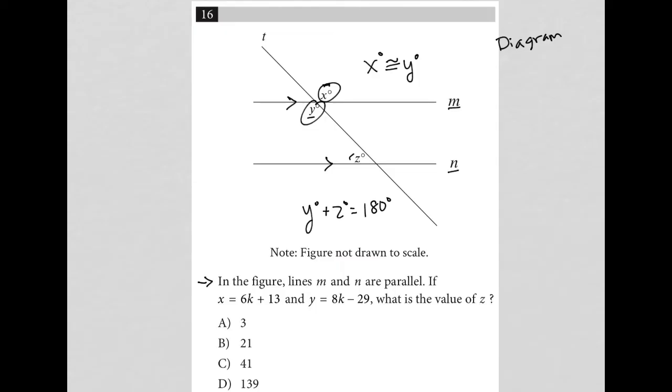Because I know that x equals y, I can say that 6k plus 13 equals 8k minus 29. Now I can combine like terms here.